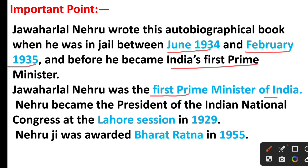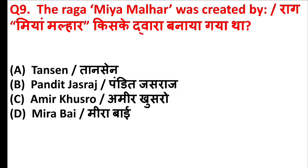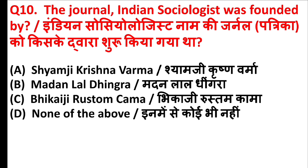Where is the 67th National School Games 2023 being held? The right answer is option A — Jammu and Kashmir. An autobiography, 'Toward Freedom,' was written by — ? The right answer is option B — Jawaharlal Nehru. Nehru wrote this autobiographical book when he was in jail between June 1934 and February 1935, before he became India's first Prime Minister. Nehru became president of the Indian National Congress at the Lahore Session in 1929 and was awarded the Bharat Ratna in 1955.